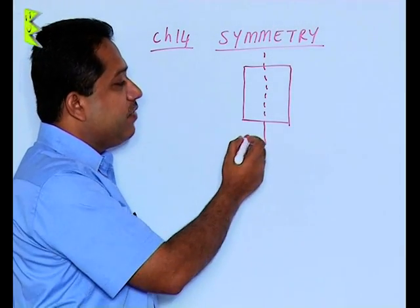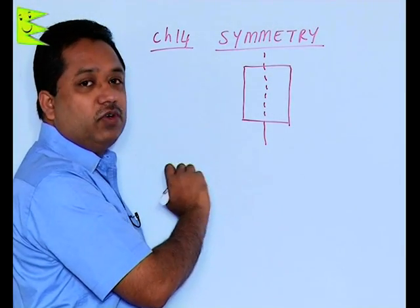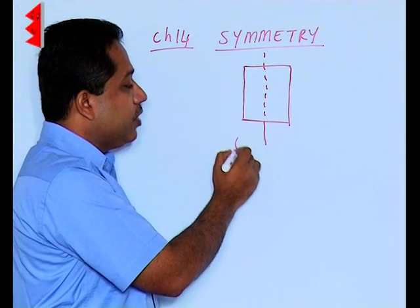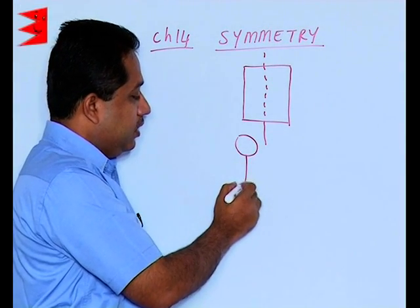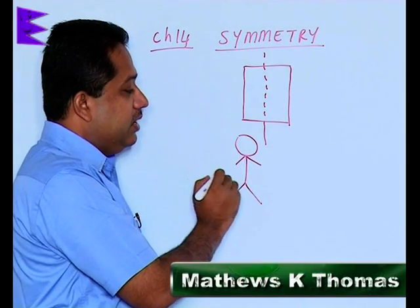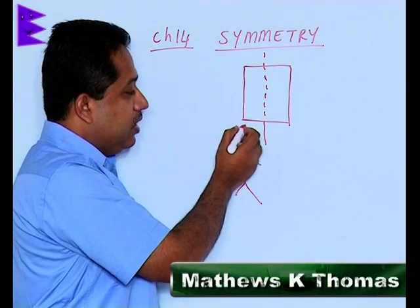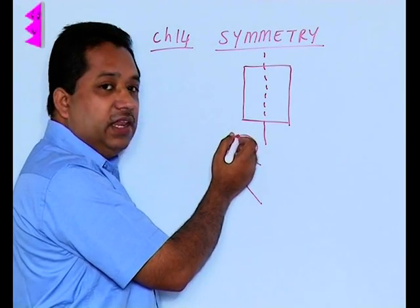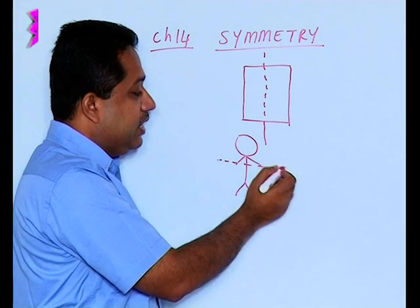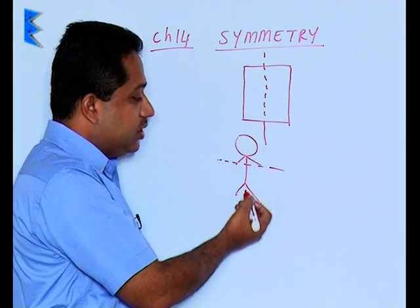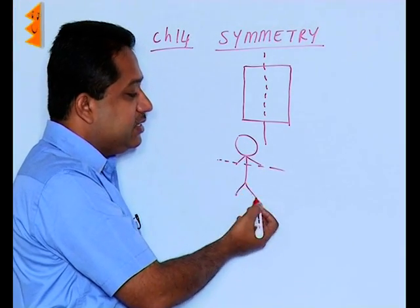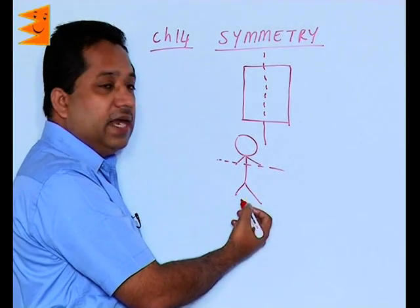In daily lives, we have many examples which have got symmetry. For example, if you take the figure of a human being. If we divide this horizontally, we find that the upper portion and the lower portion do not coincide. We have the head here and the legs here — they are not identical.